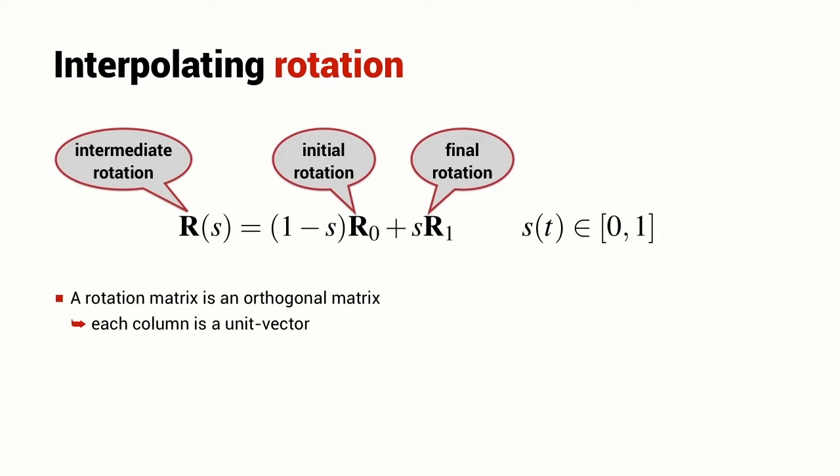A rotation matrix is not just any old 3 by 3 matrix. It's a special matrix. It's an orthogonal matrix and that means that each column in the matrix is a unit vector.